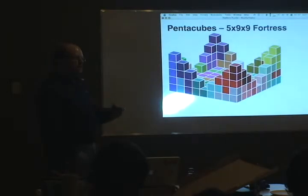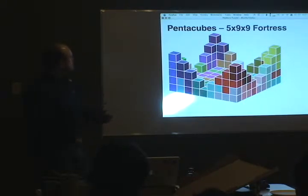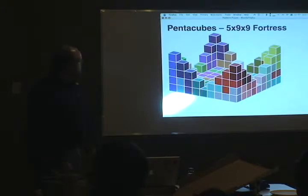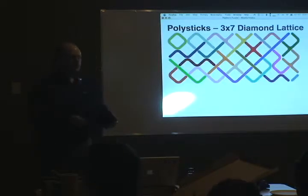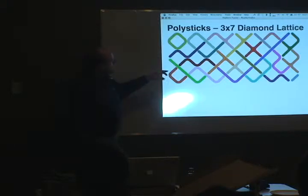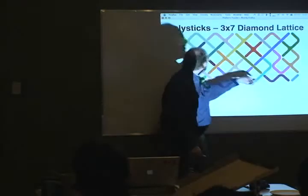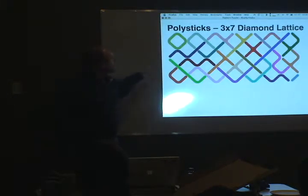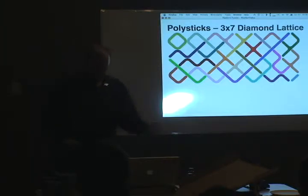These are pentacubes — you take the pentominoes but extend them into three dimensions, so they're not flat anymore. You've got 29 different ones, and you can make some very interesting shapes. And then there's another puzzle I've never even touched: these are called polysticks. Instead of putting squares together, you take line segments on a grid — the little segments on your graph paper. These are all the possible shapes from one up to four polysticks, and they fit together into this lattice. I just look at that and think, wow, that's really cool.